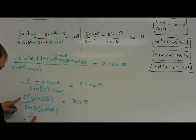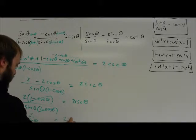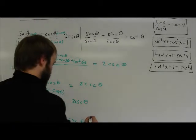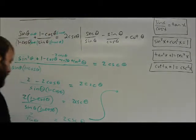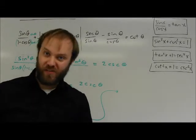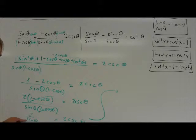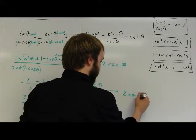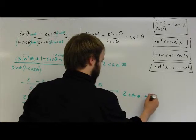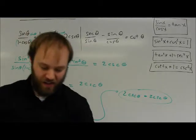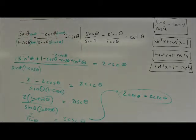I'm left with 2 over sine of theta equals two cosecant of theta. And I know that one over sine of theta is the same thing as cosecant. So two over sine of theta can be written as two cosecant of theta, which equals the two cosecant of theta on the other side. The idea in this case: get a common denominator, which can be complicated. Add fractions carefully, simplify using Pythagorean identities, factor, and cancel common factors.